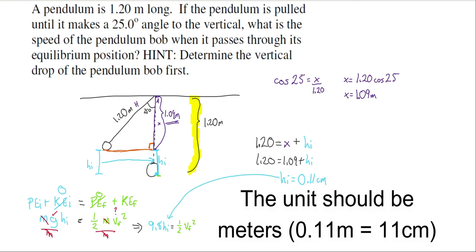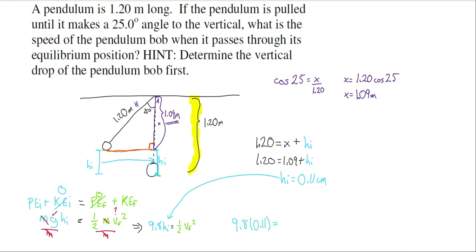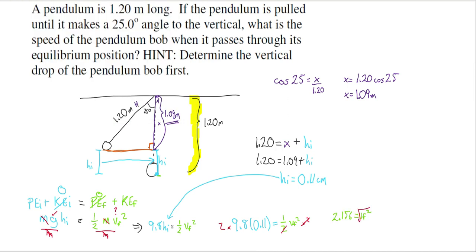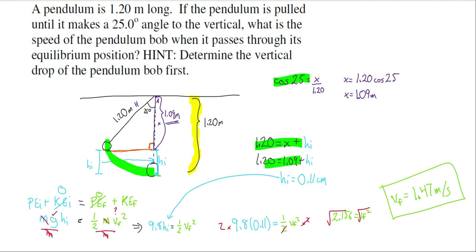Now I can plug this into the equation and solve for velocity. We find the velocity at the very bottom is 1.47 meters per second. The key: potential energy stored in the initial position turns into kinetic energy as it swings down. Then to get those last pieces, we use trigonometry and math. I hope that helped with the people who had trouble with this problem. Have yourself a good day, everybody.